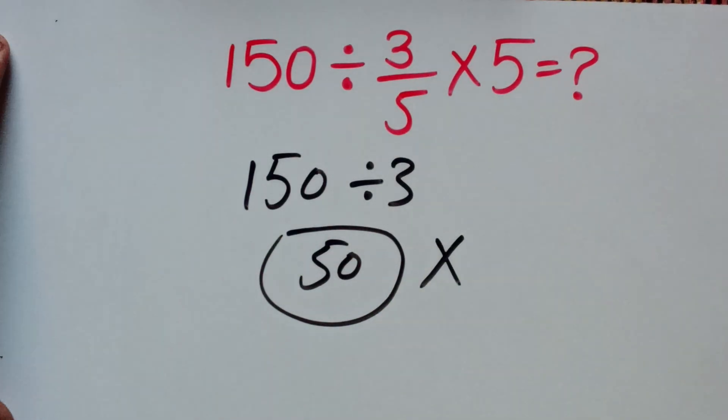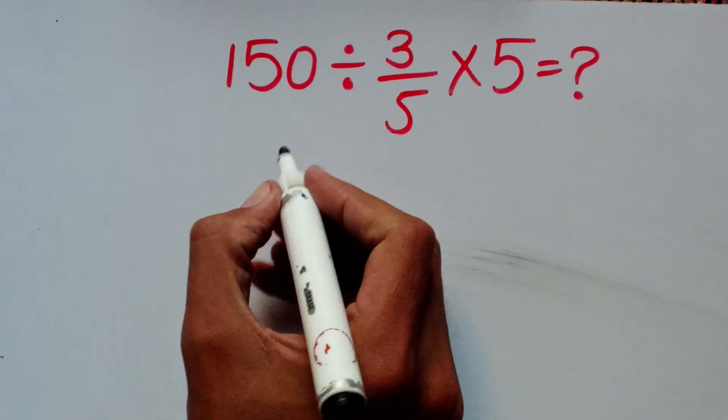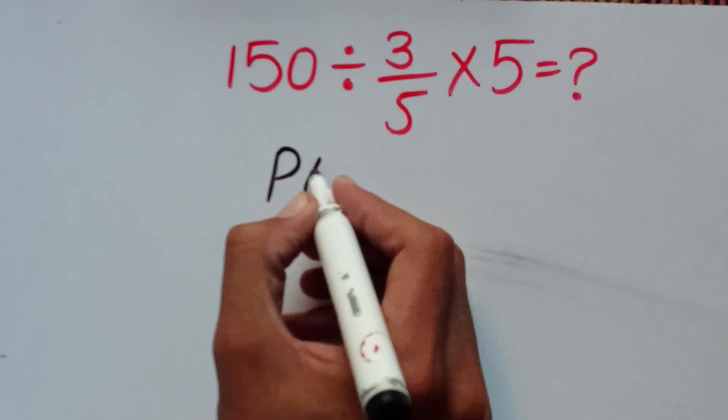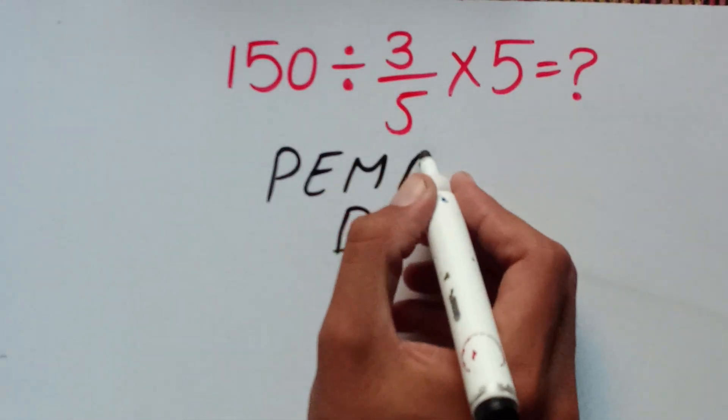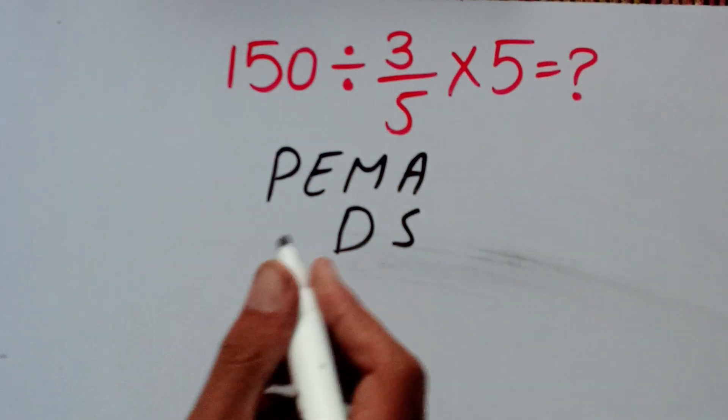Now I am going to solve this question by the correct method. According to PEMDAS, first we solve parenthesis, then exponent, then multiplication and division, and after that addition and subtraction.